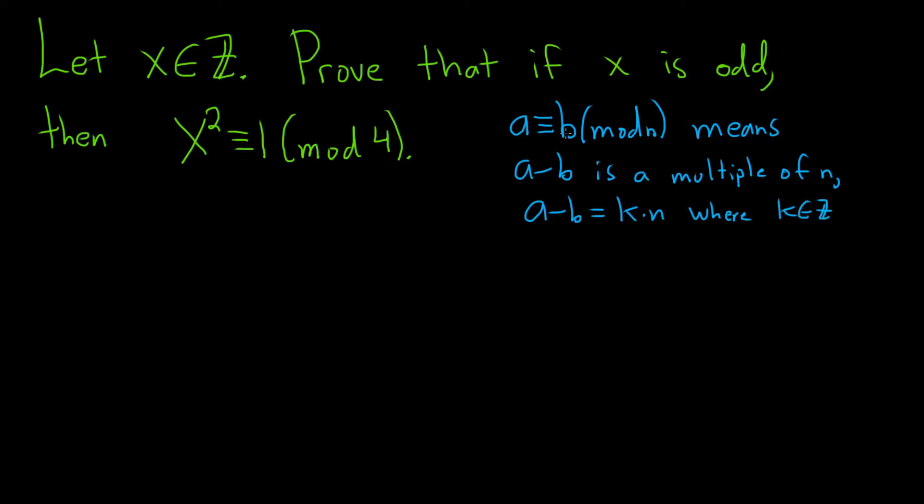So a is congruent to b modulo n if a minus b is divisible by n, or another way of saying that is a minus b is a multiple of n, or a minus b equals an integer times n. So let's go ahead and go through this proof.